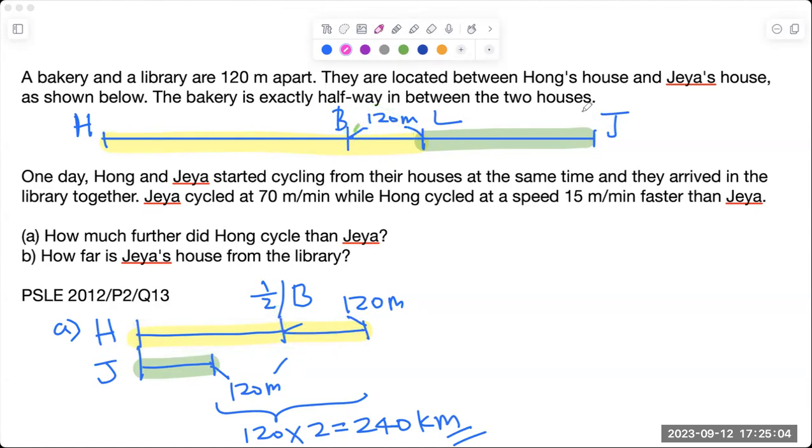When you look at this direction, Jaya actually travels less than the midpoint. So the midpoint is here and it's 120 meters less. So now you take 120 plus 120 to give you 240.